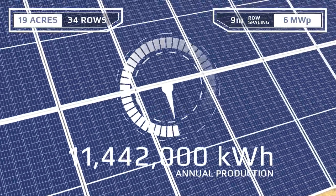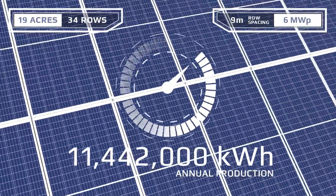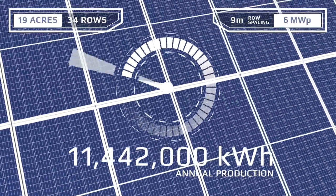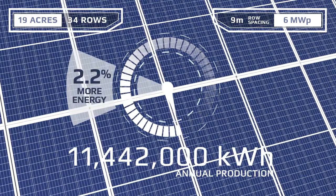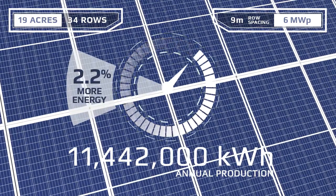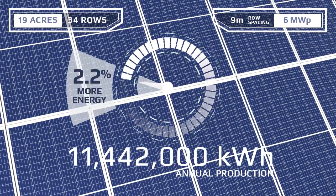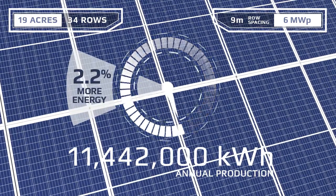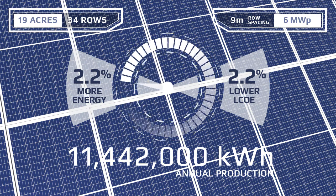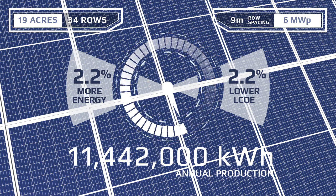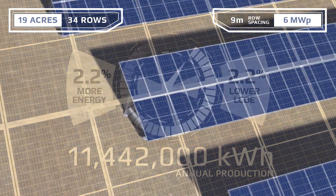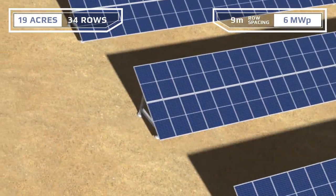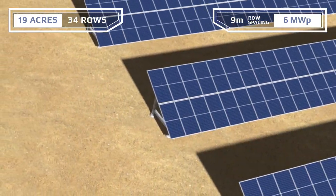And here's the Canadian Solar KOO poly module system with the exact same 6 megawatt design. Our KOO poly modules produce 2.2 percent more energy — that's a 2.2 percent lower LCOE on an apples-to-apples basis. Now, let's take into account the better shading tolerance of KOO modules.